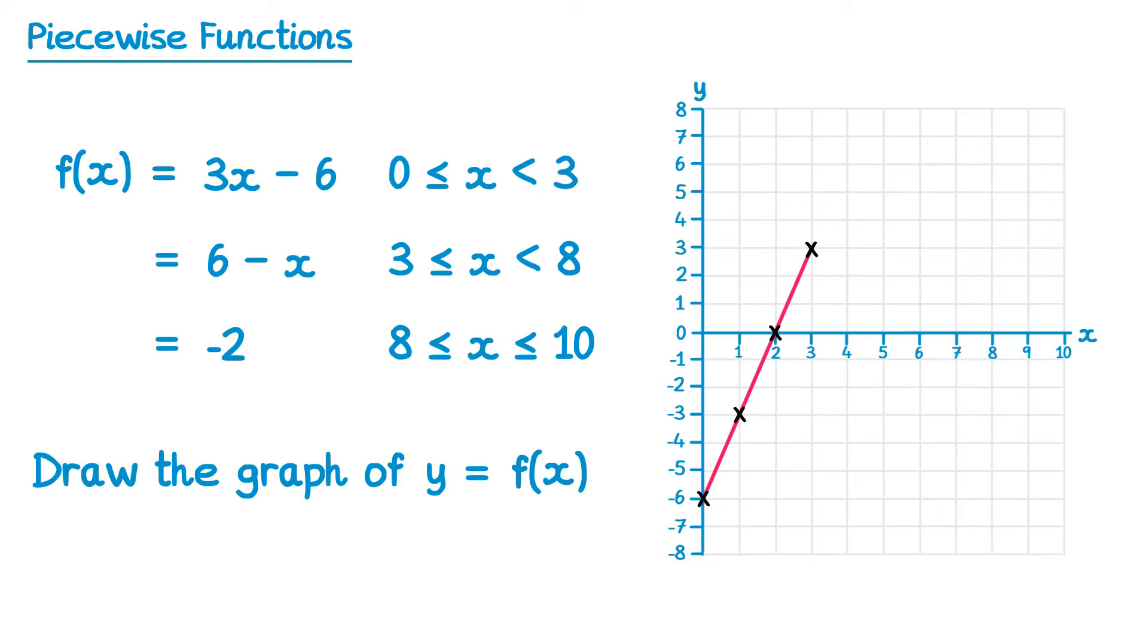Now we move on to the next part of the function, so when it's equal to 6 minus x, and this is for the x values between 3 and 8. So this function has an intercept at positive 6, and it has a gradient of negative 1, so we get the point 1 5, 2 4, and so on. Normally, we would connect these up with a straight line like this. However, we only want the points where the x values are in between 3 and 8. So this point here, where x was 3, and this point here, where x was 8. So we can get rid of everything before that point, and everything after that point, and we end up with this part of the function here.